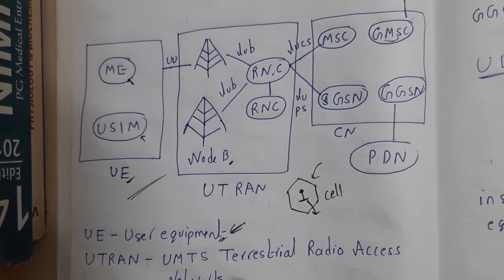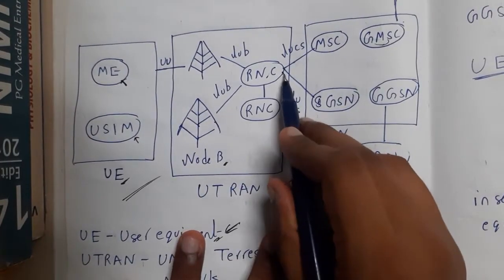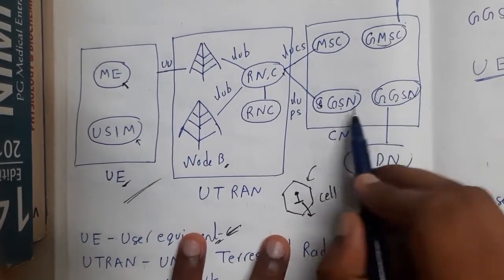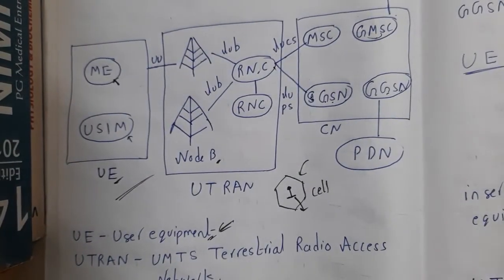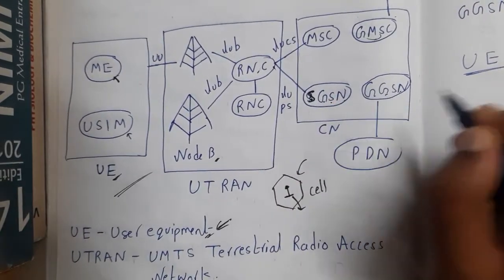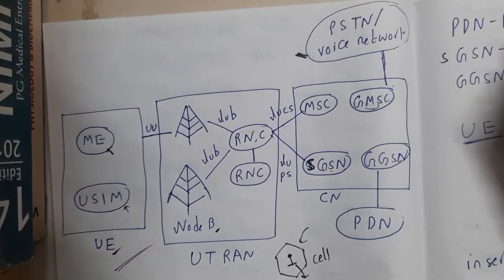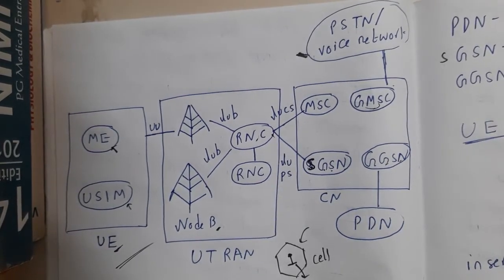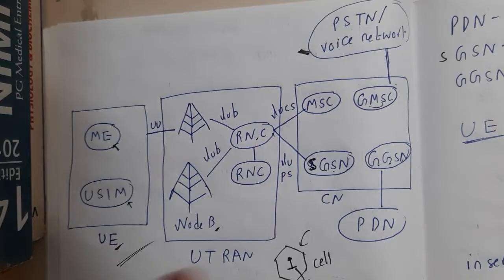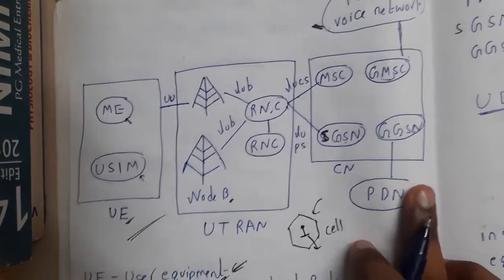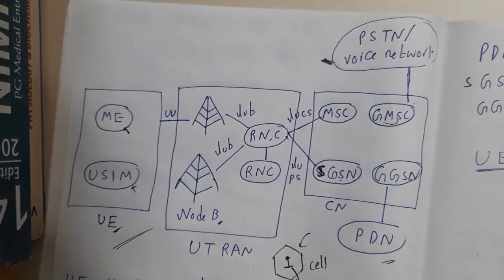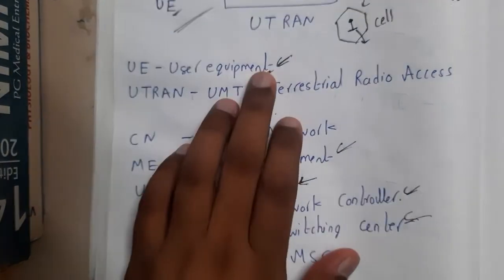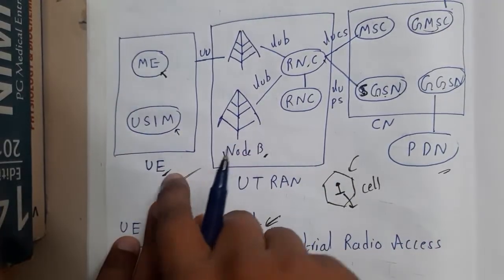If you want to transfer data, download something, or browse the internet, you will go through a different path — to the SGSN, which is the Serving GPRS Support Node, then to the GGSN, which is the Gateway GPRS Support Node, and through the gateway you reach the Packet Data Network.